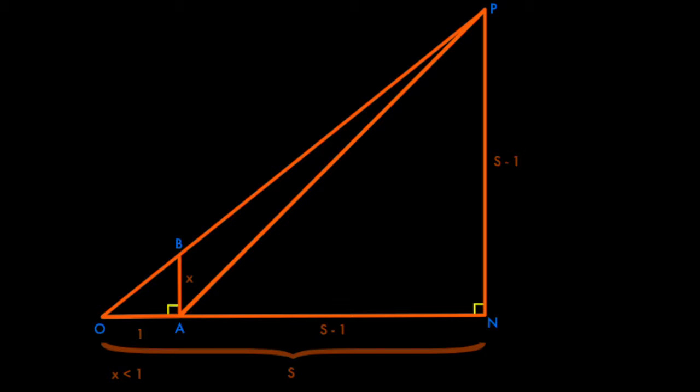So we can call the length ON on the bottom S, and the remaining length AN is S-1, because OA is 1. And because ANP is a 45, 45, 90 degree triangle, the other side NP is also S-1.